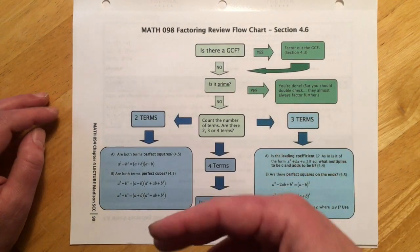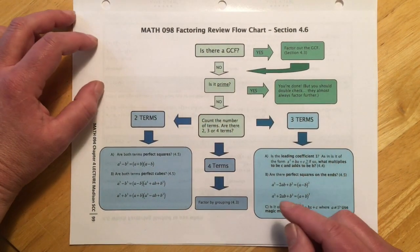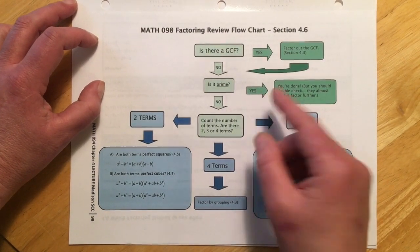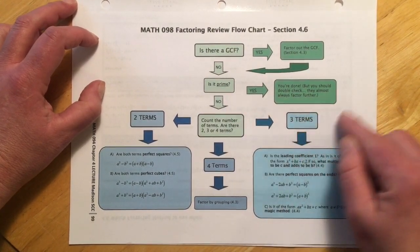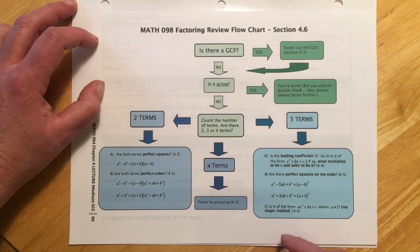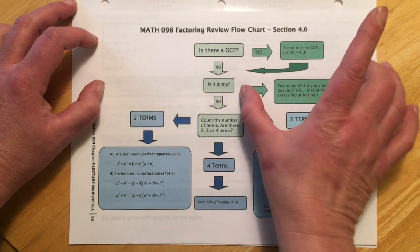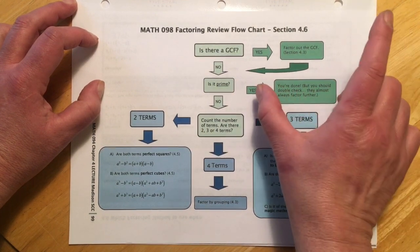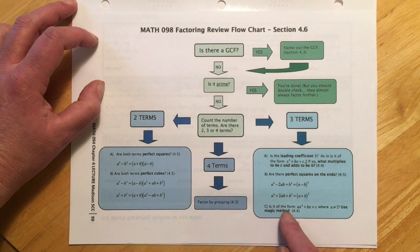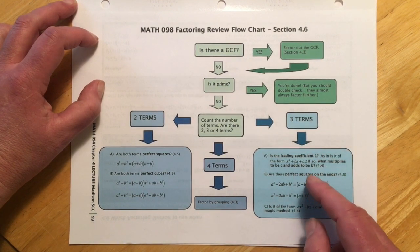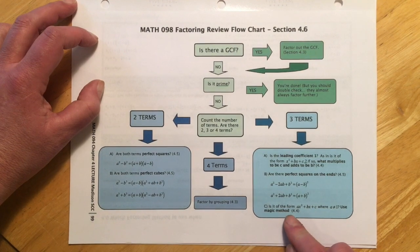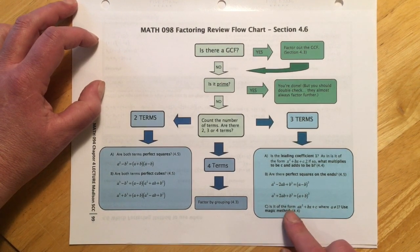If it's three terms, it's going to be one of three things. So it's either going to lead with a one, so that's where we just have the plain x squared up front. And those are the nice kind where we just do our parentheses and our x's and figure out what multiplies the end, adds to the middle. There could be perfect squares on the ends of the equation. In that case, we're in these factoring formulas. Or if both of those things fail, so it doesn't have a one and it doesn't have perfect squares, then that leaves you magic method for solving or for factoring.